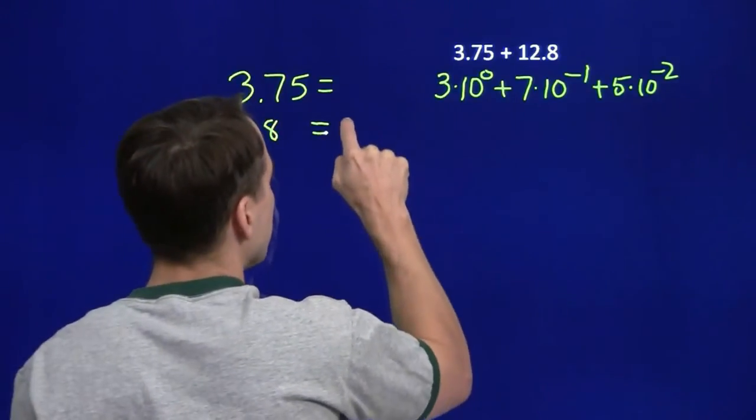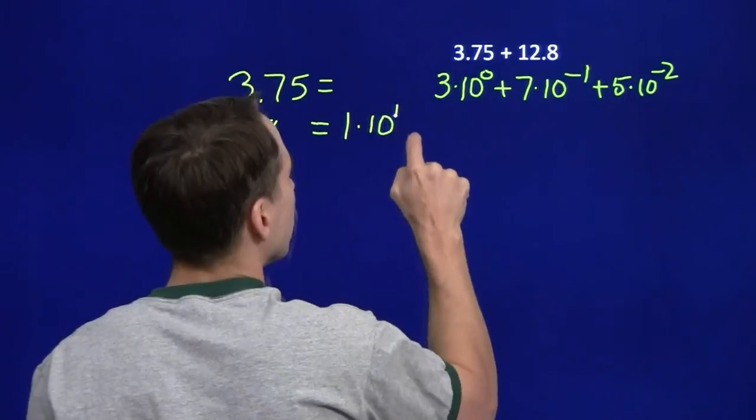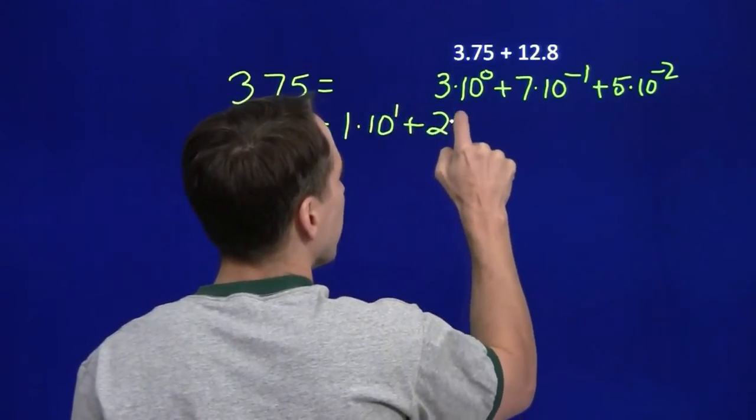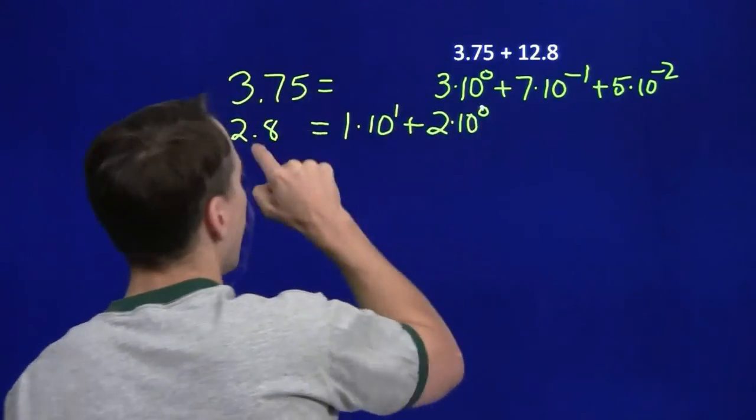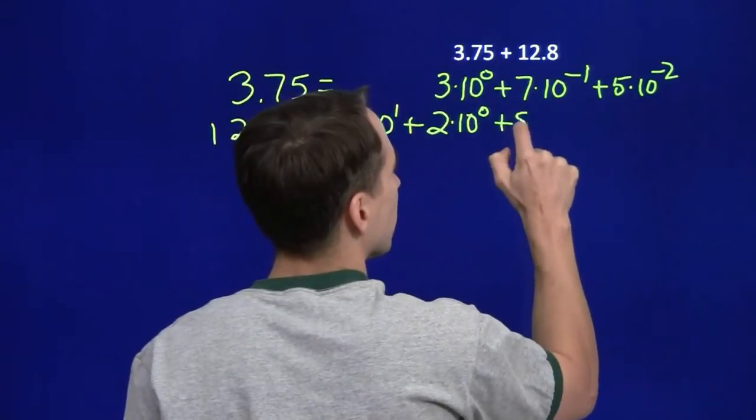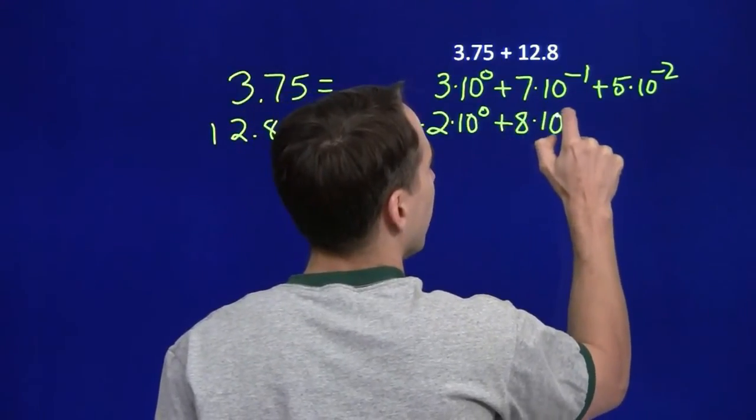The 1 is in the tens place. Tens, that's just 10 to the first. The 2 is in the units place. And the 8 is in the tenths place. And we don't have any hundredths.